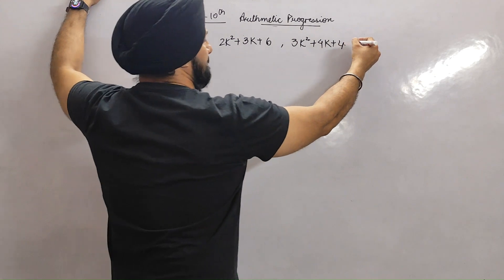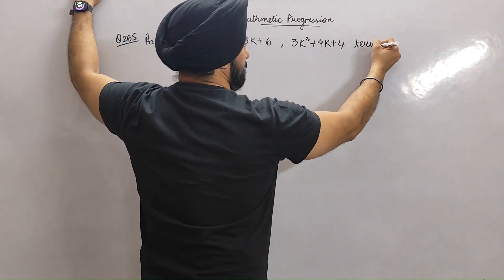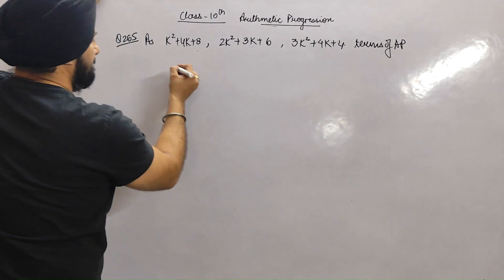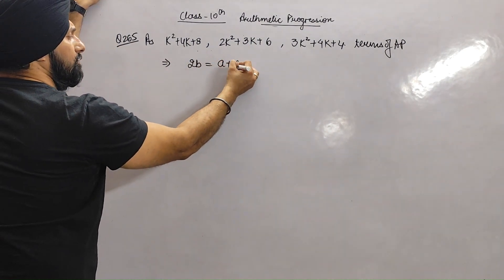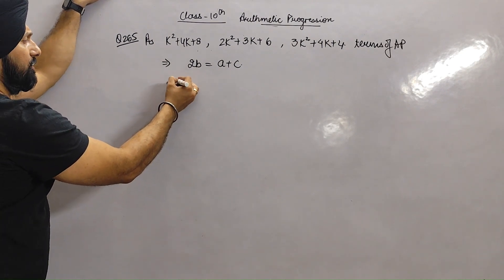Since these are consecutive terms of AP, twice the middle term should be equal to a plus c. So twice of...